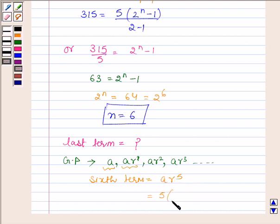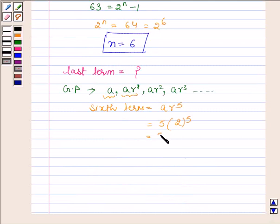So a is 5, r is 2. 2^5, so we have 5 × 32, which is equal to 160.